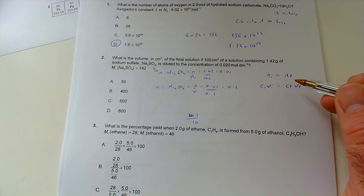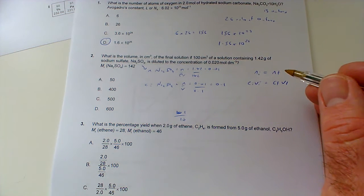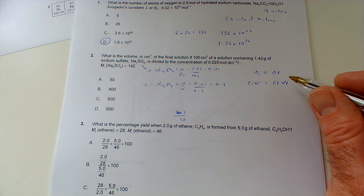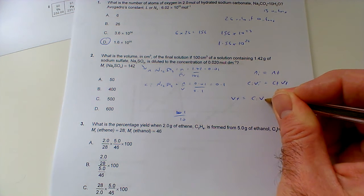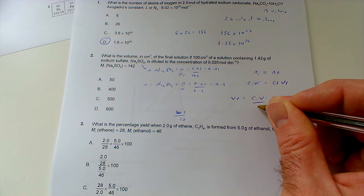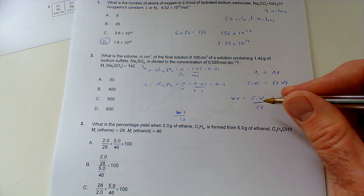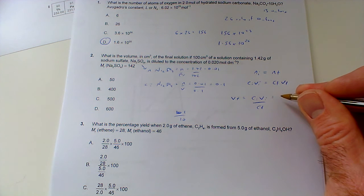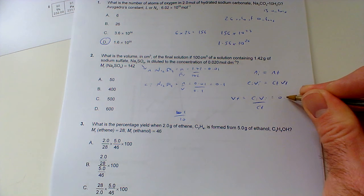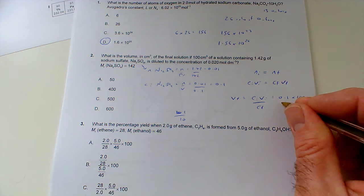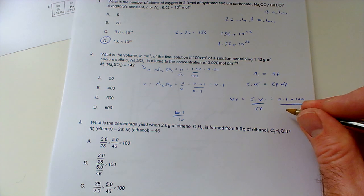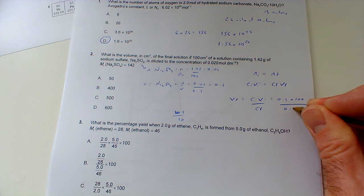So now we can use this equation then. Let's rearrange it to find the final volume, that's what we're looking at. So VF equals CI VI over CF. Initial concentration is 0.1, we've just worked that out, times we can leave that as a hundred because it'll give the answer automatically in centimeters cubed at the end anyway. And then we divide by 0.02, our final concentration.